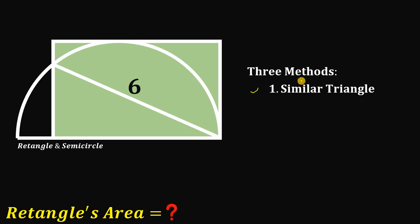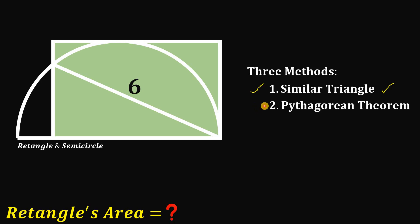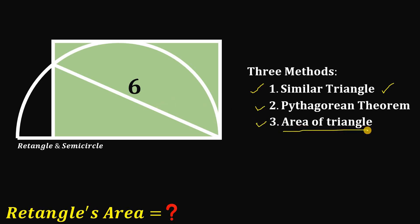The first method is similar triangles — we will use similar triangles, so I suppose you have already mastered that method. The second is the Pythagorean theorem. The third is the area of a triangle. We have a rectangle, but if we cut it in two we get a triangle, so the area of the rectangle is just two times the area of that triangle.